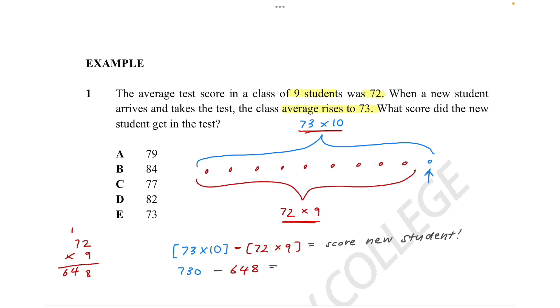So let's do a little bit of subtraction. So 730 minus 648. That's 10 minus 8. That's 2. And then we have to get another 10s. So 10 minus 4 is 6, plus 2 is 8. And 6 minus 6 is 0. So 82. So now we know that the score of the new student is 82. Therefore, the answer is D.